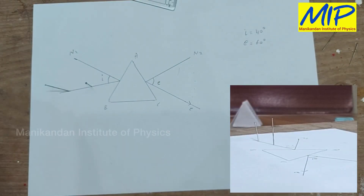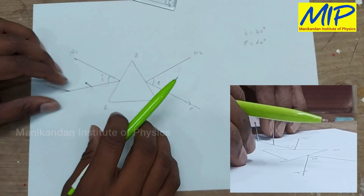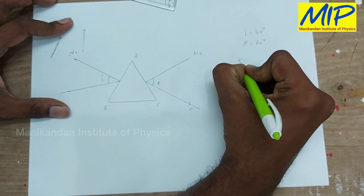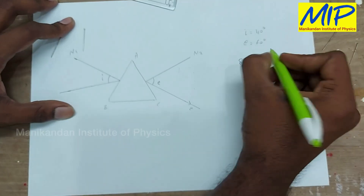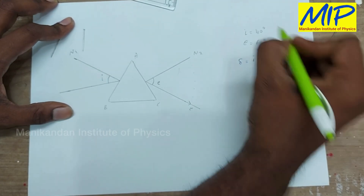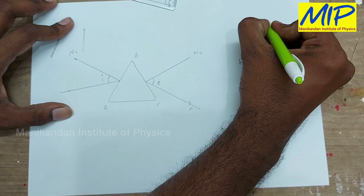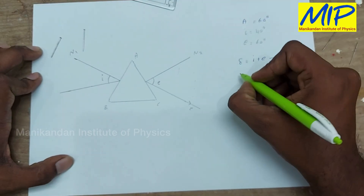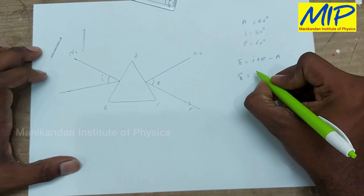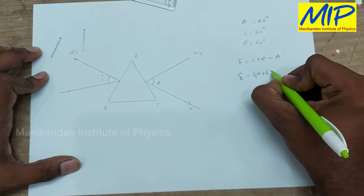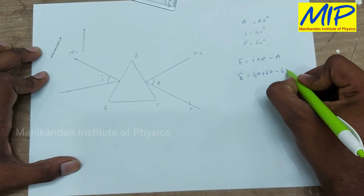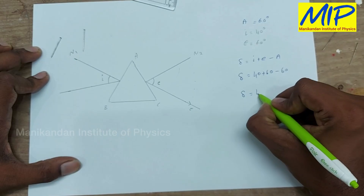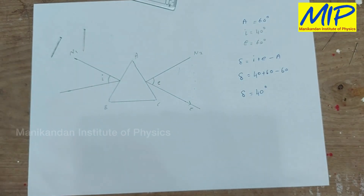From these two values I am able to find my angle of deviation. The formula is delta equals I plus E minus A. My angle A is already given as 60 degrees since it is an equilateral triangle. So delta equals 40 plus 60 minus 60, which gives my delta equal to 40 degrees.